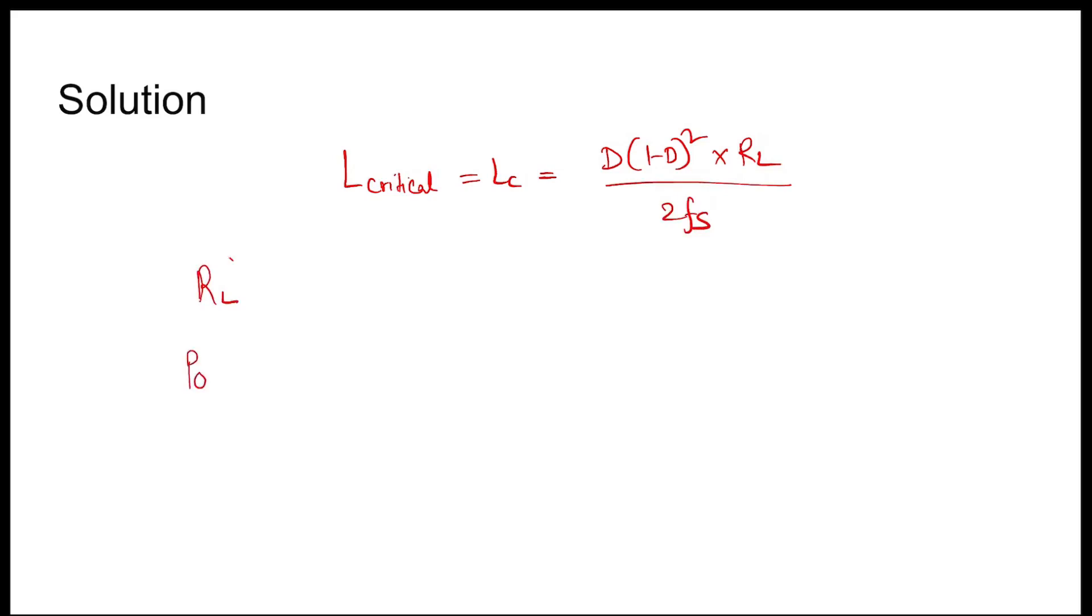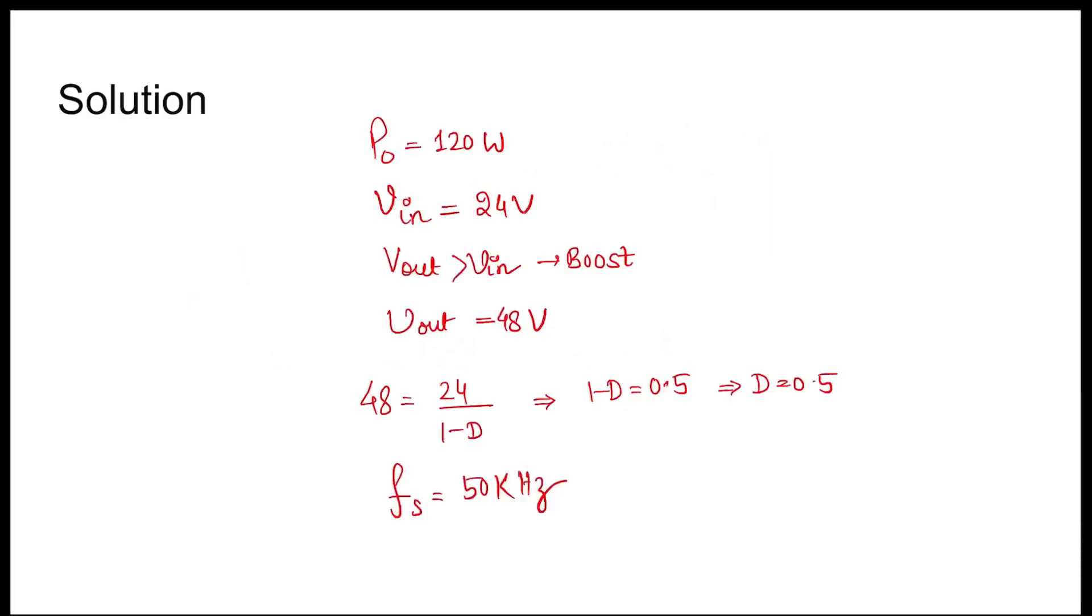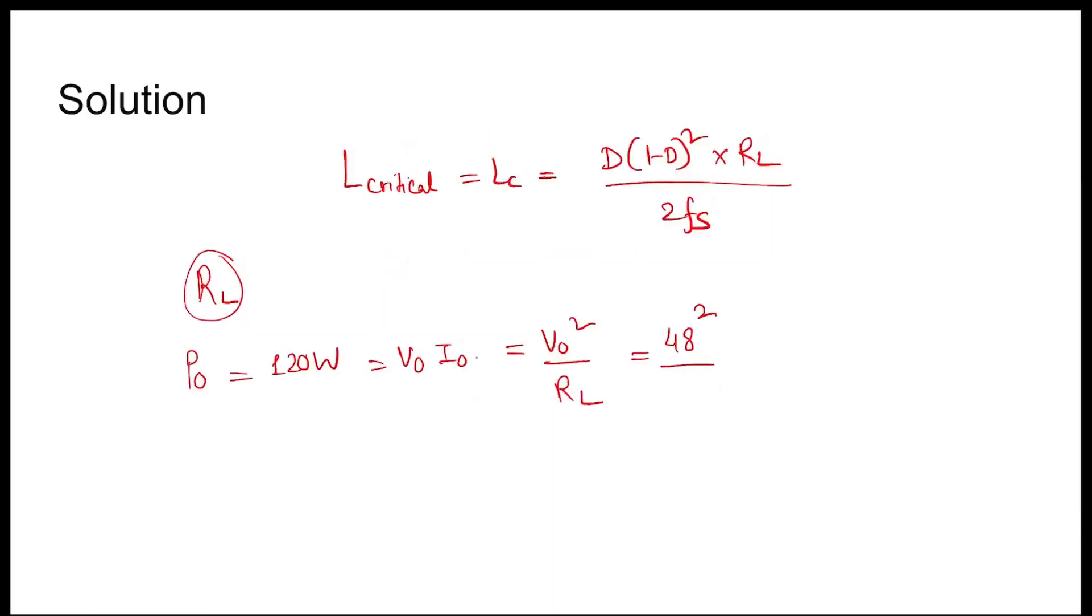Now P out equals 120 equals V out times I out, also equal to V naught square by RL. Whereas V naught square is 48, so V out square divided by RL equal to 120. So from here RL can be...